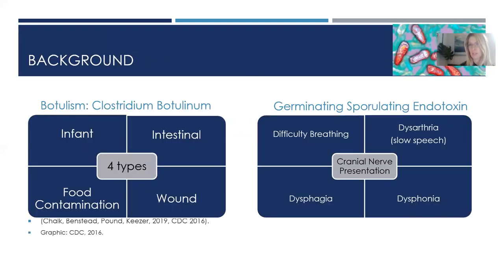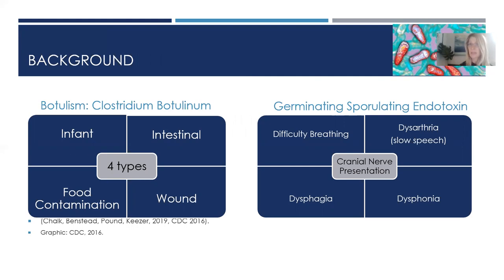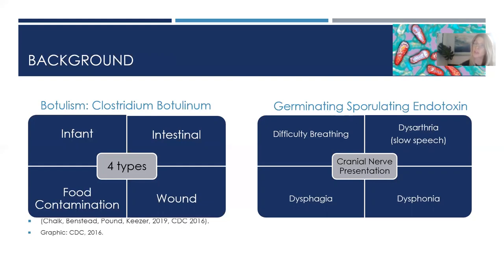Let's talk about background on this particular patient. Botulism is an extremely toxic endotoxin called clostridium botulinum. There are multiple strains and four major types: infant, intestinal, food contamination — something we are very familiar with in canning operations — and then there's wound-obtained botulism. That is what we're going to focus on today.